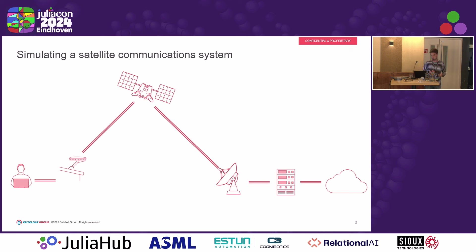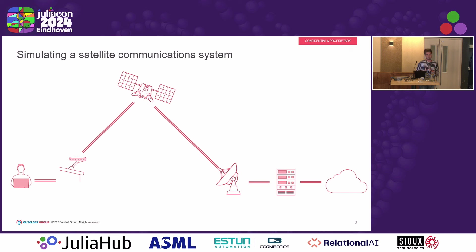There are basically four components in a satellite communication system: the user (our client), the communication antenna, the satellite, the ground antenna, and a point of presence where you peer to the main internet. Simulating each component individually is not that difficult — the satellite follows orbital dynamics, and link modeling is well-established theory. The really difficult part is getting all components to work together and managing the systems around them.